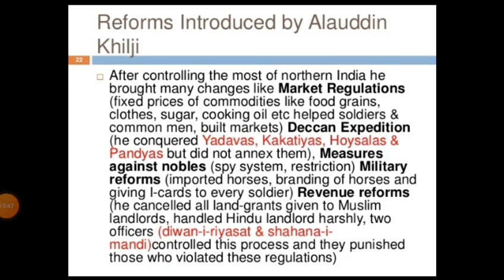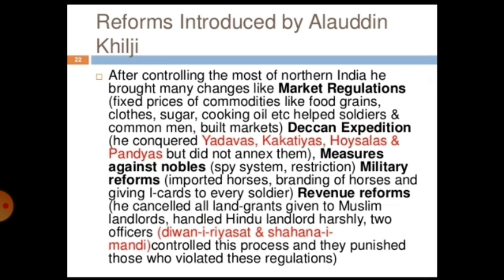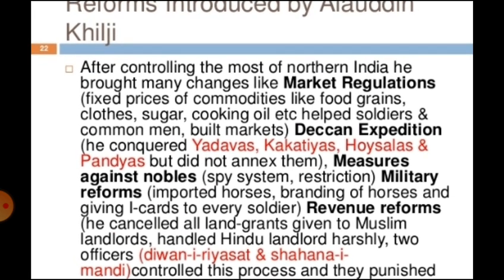Alauddin Khilji introduced several important reforms. After controlling most of Northern India, he introduced market regulations — fixing prices of commodities like food grains, clothes, sugar, and cooking oil — to help soldiers and common men. Market regulation meant a fixed price for everything; selling above the fixed price would result in punishment or fine, similar in principle to today's concept of black market control.